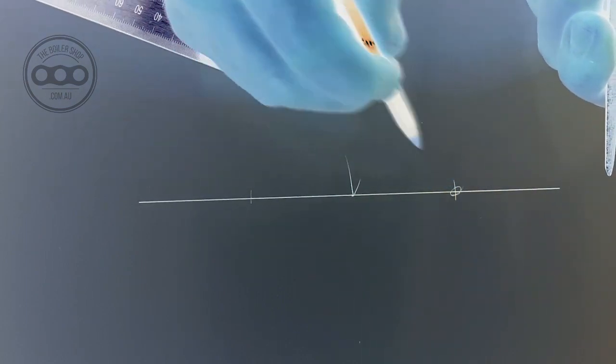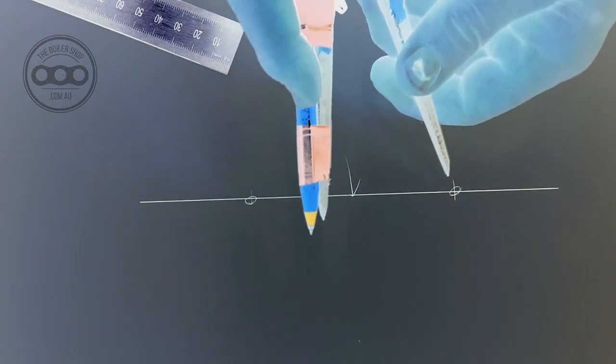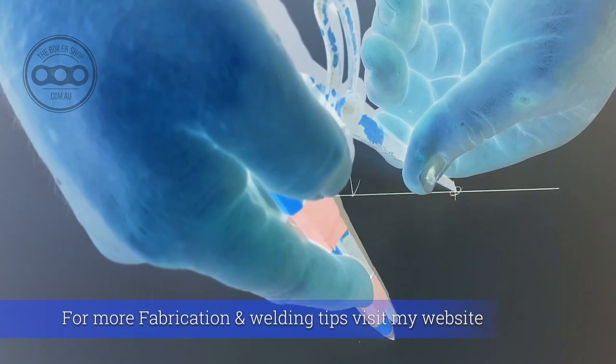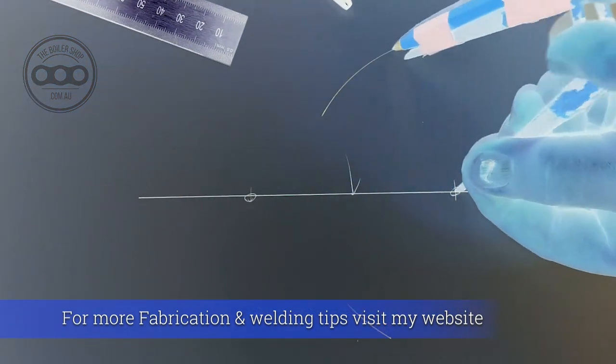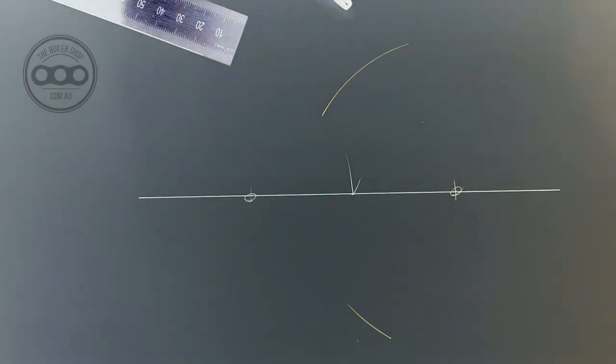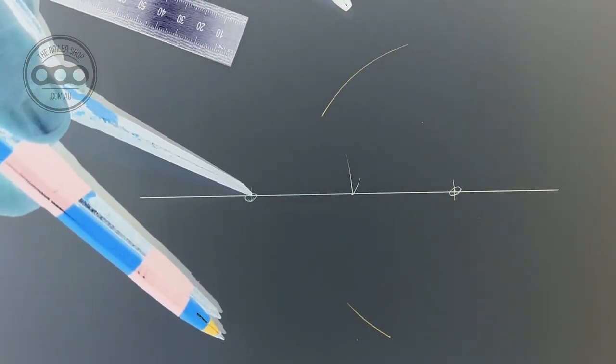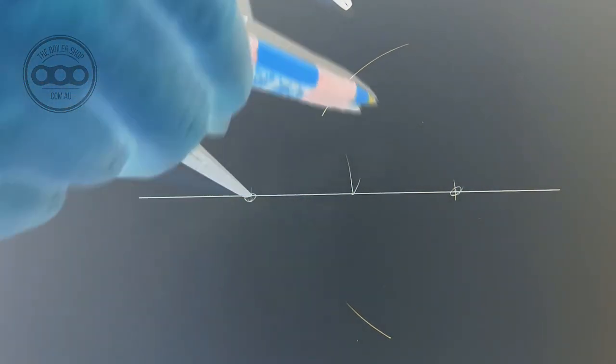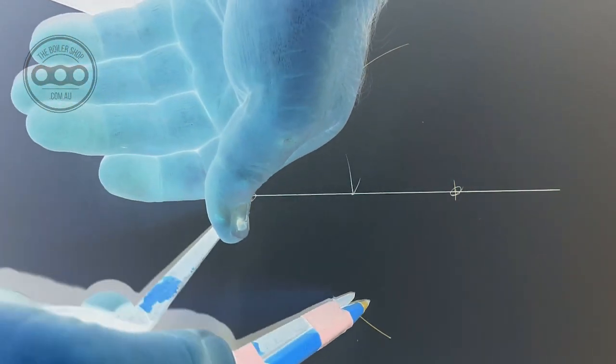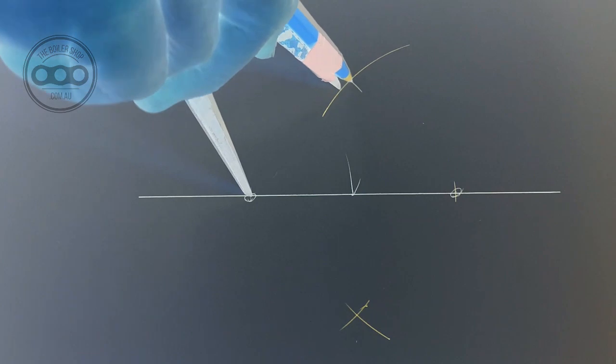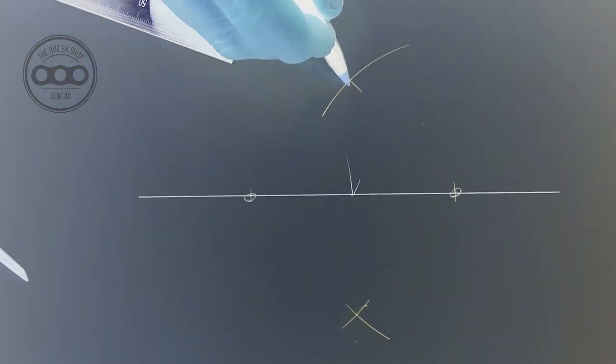From this point and this point we're going to swing arcs above and below, and same on the other side. That gives us two points.